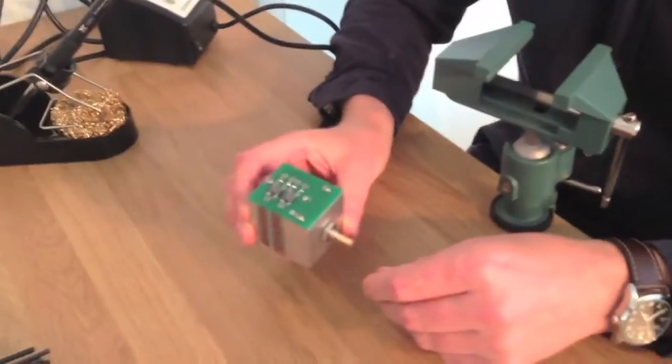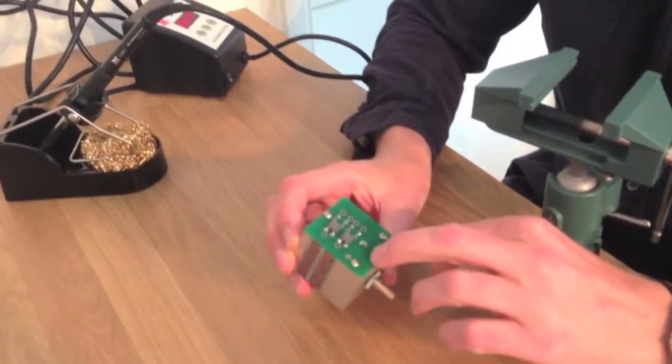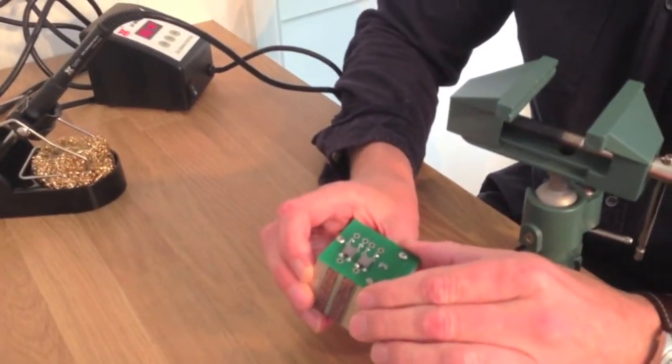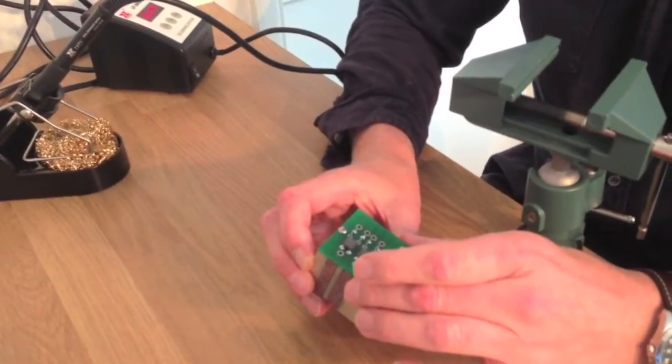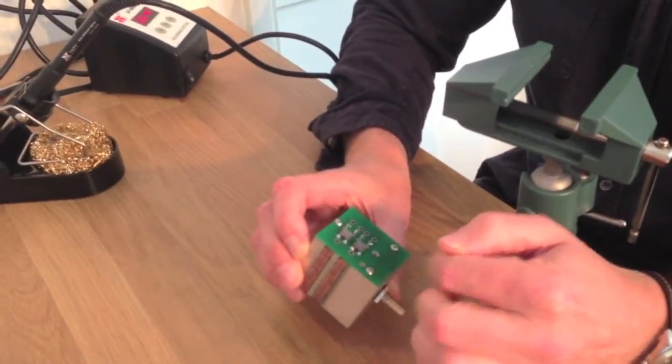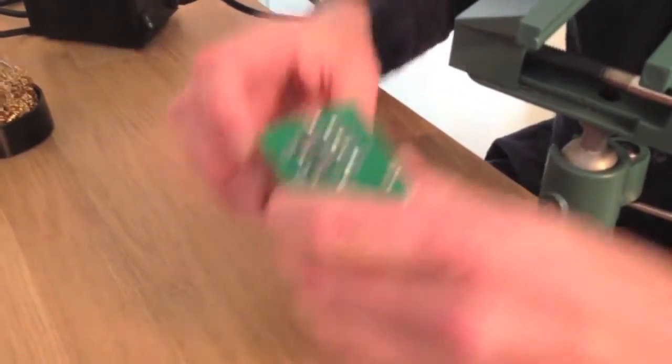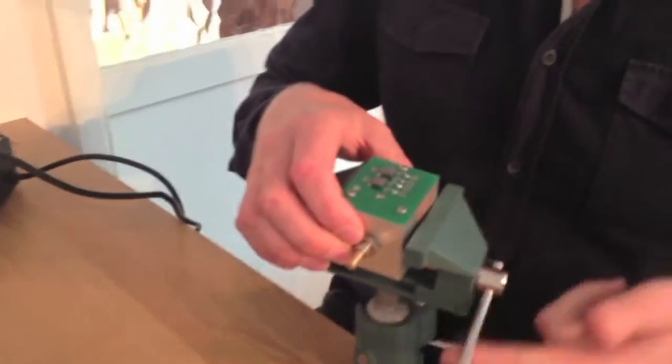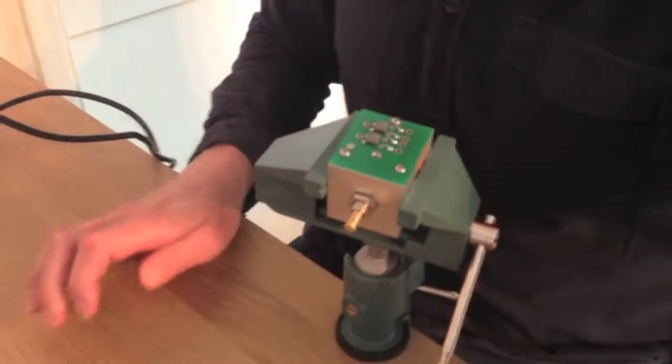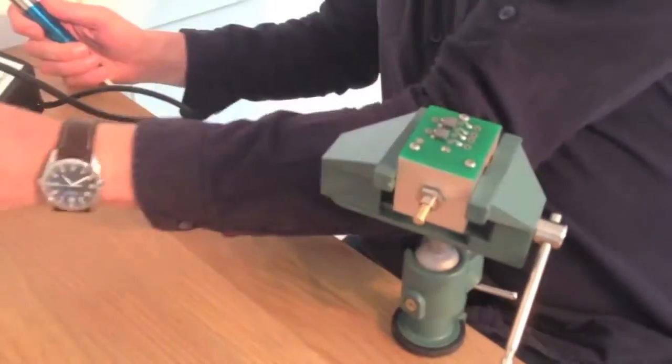As you can see the Cosmo comes with this PCB that's stuck on the top. Now to get access to the underside of this PCB, we need to undo these connections here. Pop it in the vice. Solder sucker at the ready.